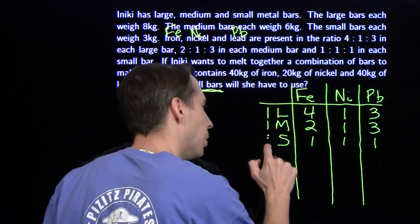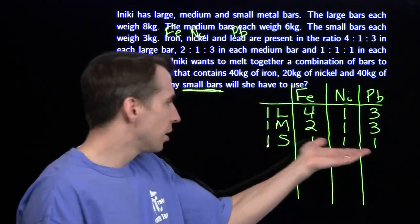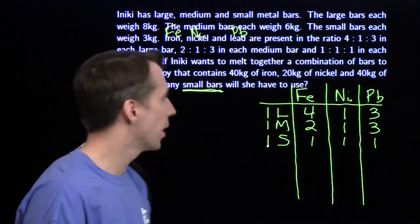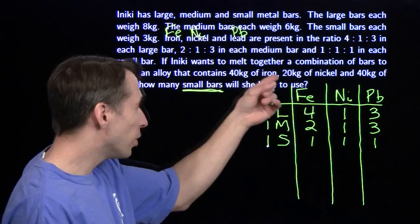The small bars are 1:1:1, 3 kilograms total, so one of each. For one large bar, one medium bar, one small bar, this is the number of kilograms of each of these metals. We're aiming for 40, 20, and 40.